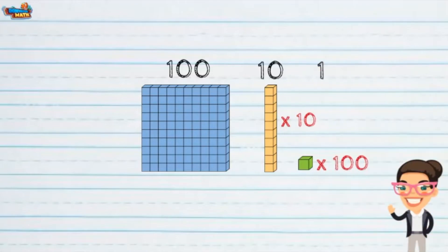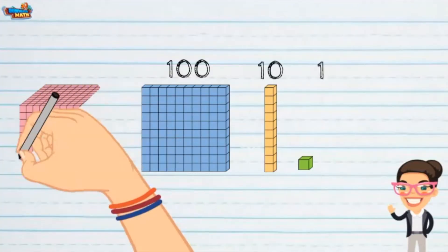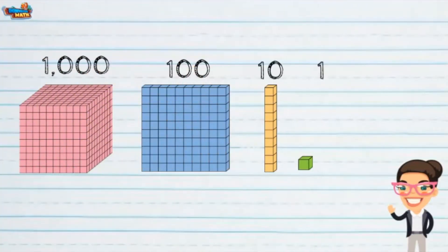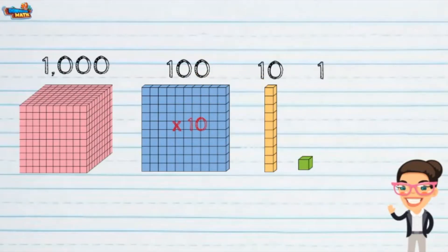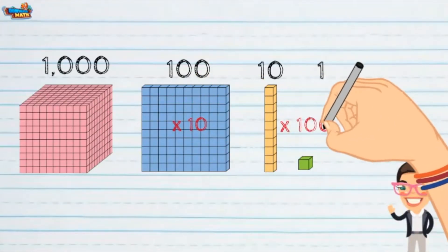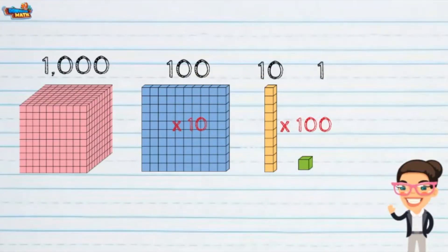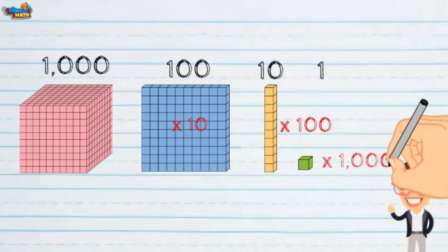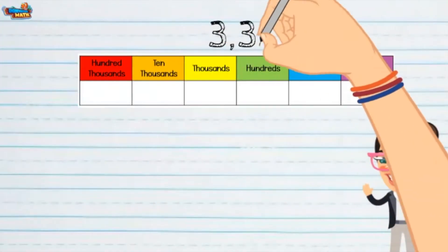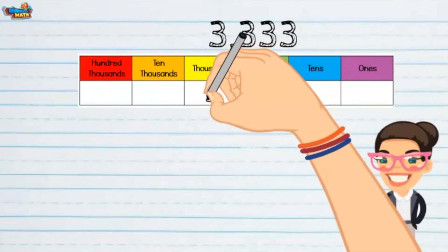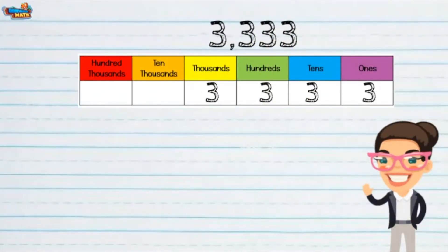It takes 100 cubes to make one group of 100. This is a group of a thousand. 10 groups of a hundred make a group of a thousand. It takes 100 groups of 10 to make a group of 1,000. It takes 1,000 cubes to make a group of 1,000. Looking at the number 3,333, the ones and tens place are represented like this using base-10 blocks.